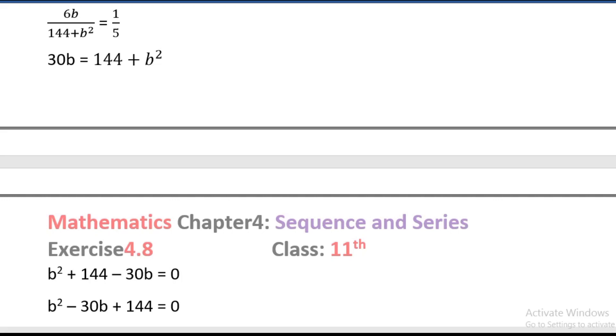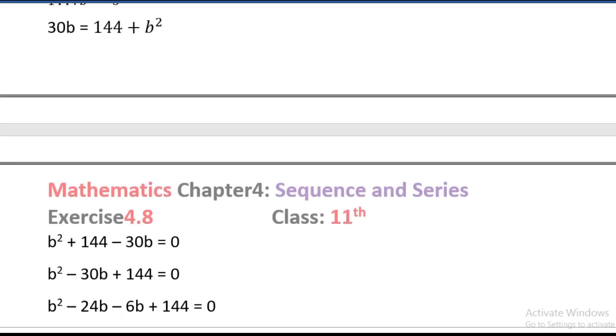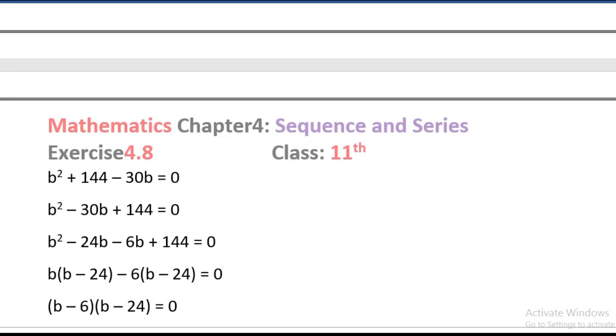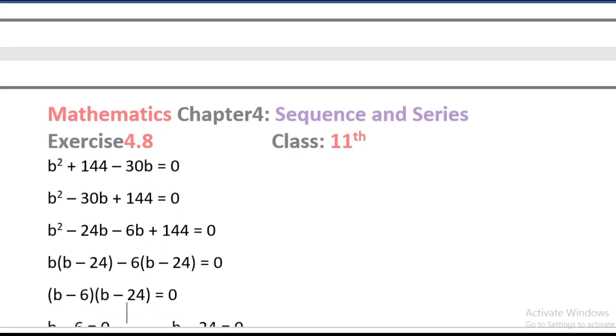Factors of minus 30 whose product is 144: minus 24 times minus 6. So b squared minus 24b minus 6b plus 144 equals 0. Taking common b from first two terms, b times b minus 24, minus 6 from next two terms, b minus 24 equals 0. So b minus 6 times b minus 24 equals 0.